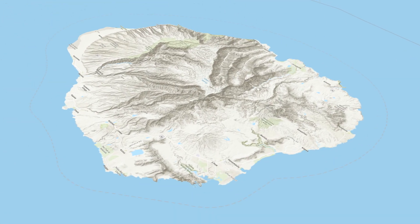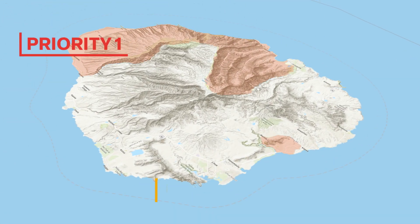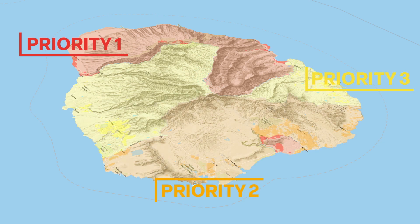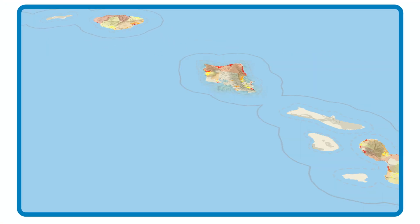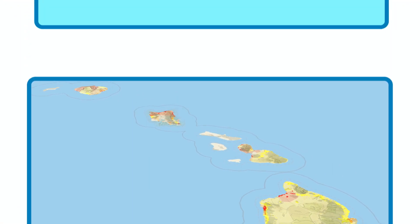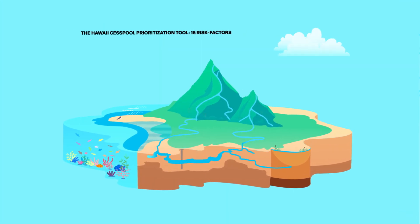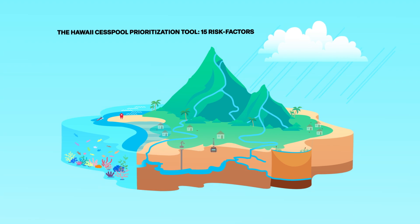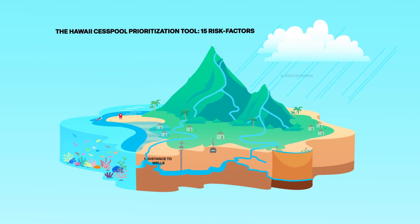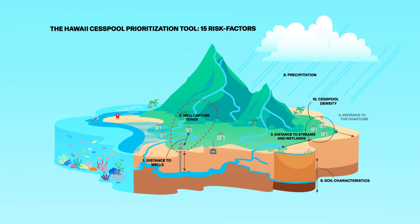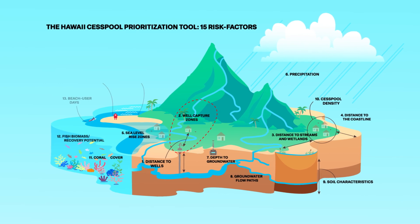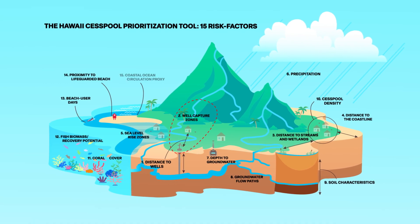Three zones indicate the level of conversion priority for each community. The priority zones were determined by considering 15 risk factors, each of which partially controls how cesspool impacts are distributed across communities and the environment.